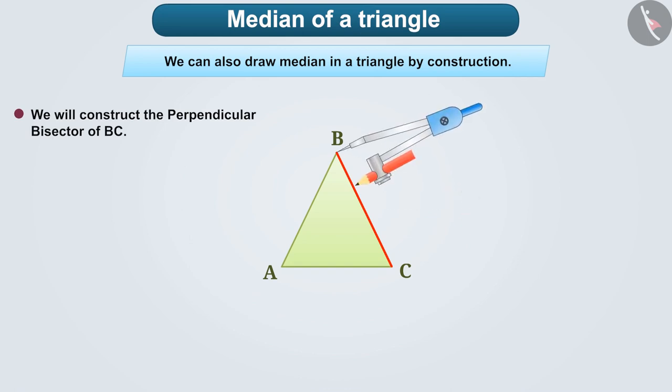We will take more than half the distance of the side BC in the compass. Then we will put the pointed end of the compass on the vertex B. Assuming B as the center, we will draw an arc that is above and below the side BC.